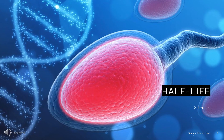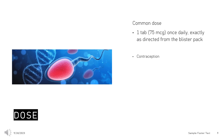The terminal half-life of Desogestrel is determined to be 30 hours. For dosing, the adult contraception dose is 1 tablet of 75 mcg once daily, exactly as directed from the blister pack. Doses must be taken continuously at the same time each day. Refer to individual product guidelines on how to manage missed doses and for detailed dosing instructions.